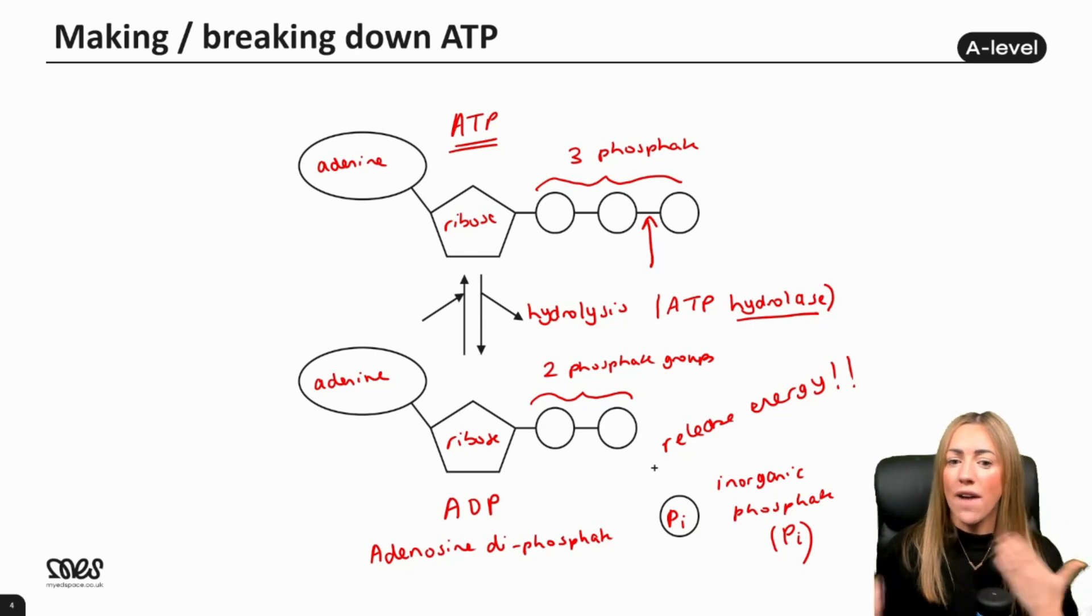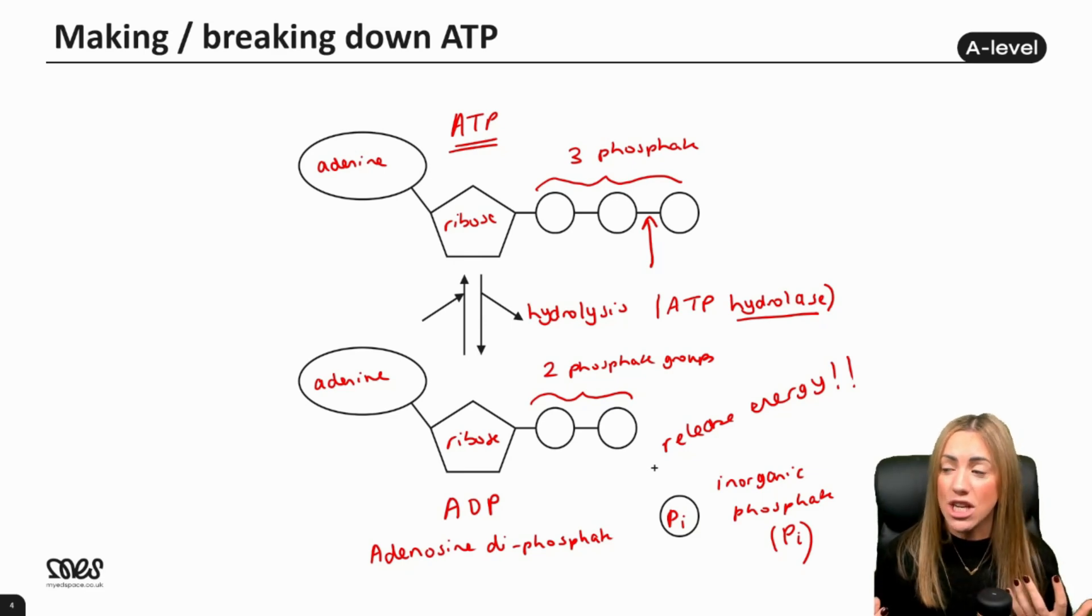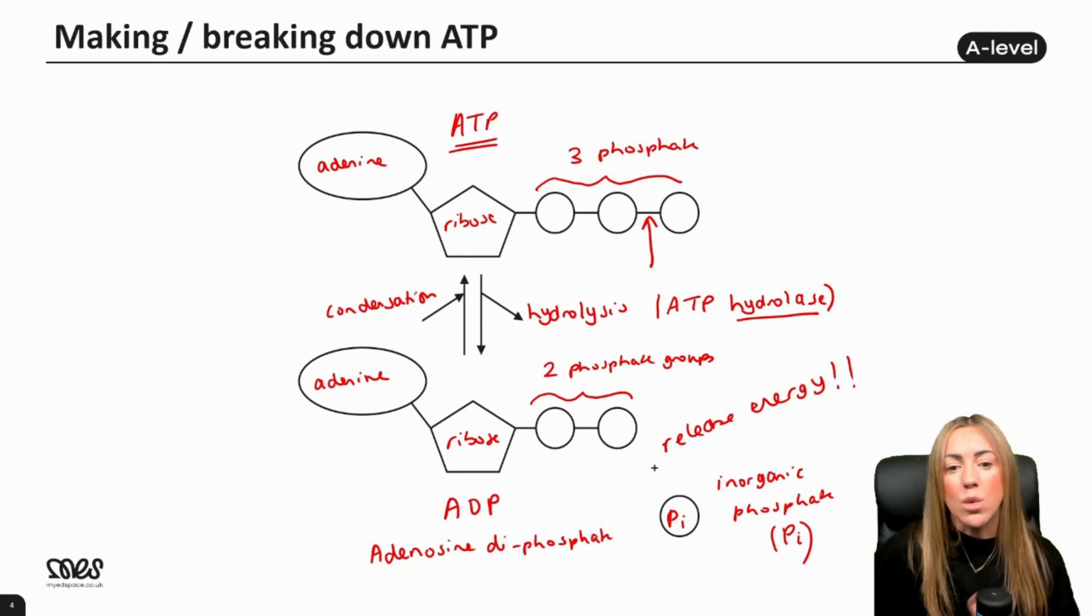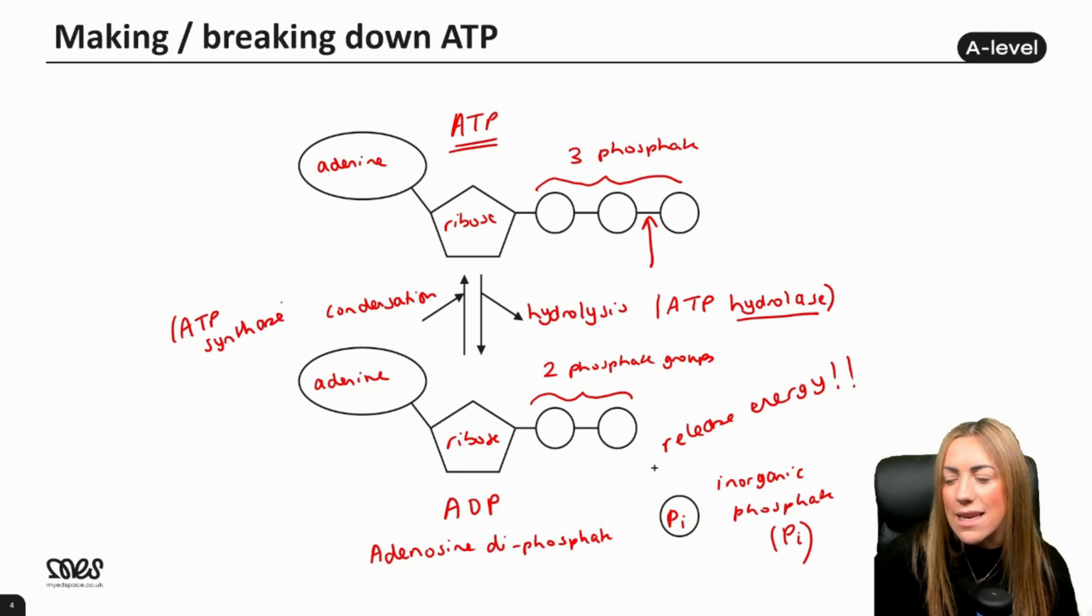This is reversible though. Once we've hydrolyzed ATP into ADP and Pi and released energy, we can use the ADP and Pi to reform or synthesize ATP, which is what we do in respiration, and plants can make ATP in photosynthesis. Going back up from ADP and Pi to ATP, this would be condensation because we are now making a bond, done by the enzyme ATP synthase. This requires energy, which we can get from glucose in respiration, or plants can use light energy.